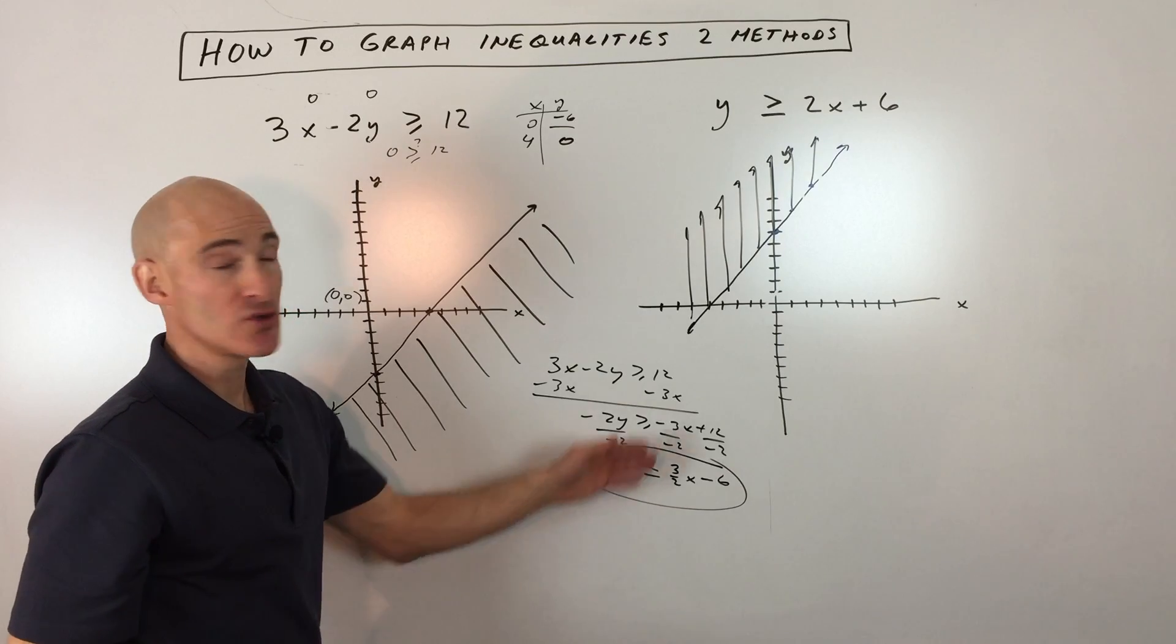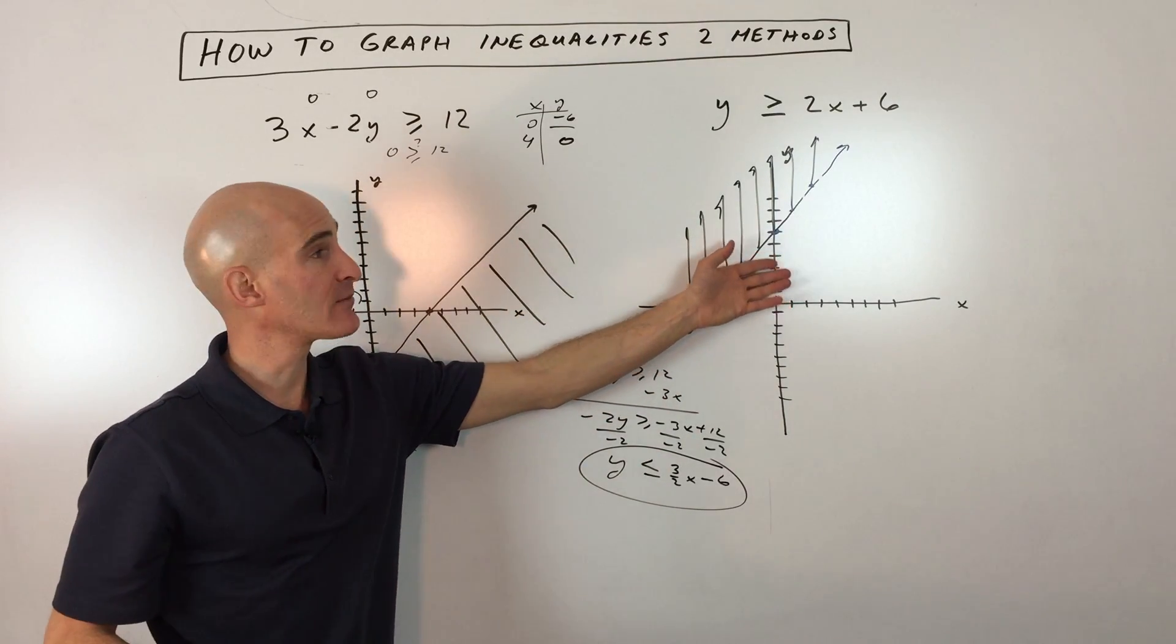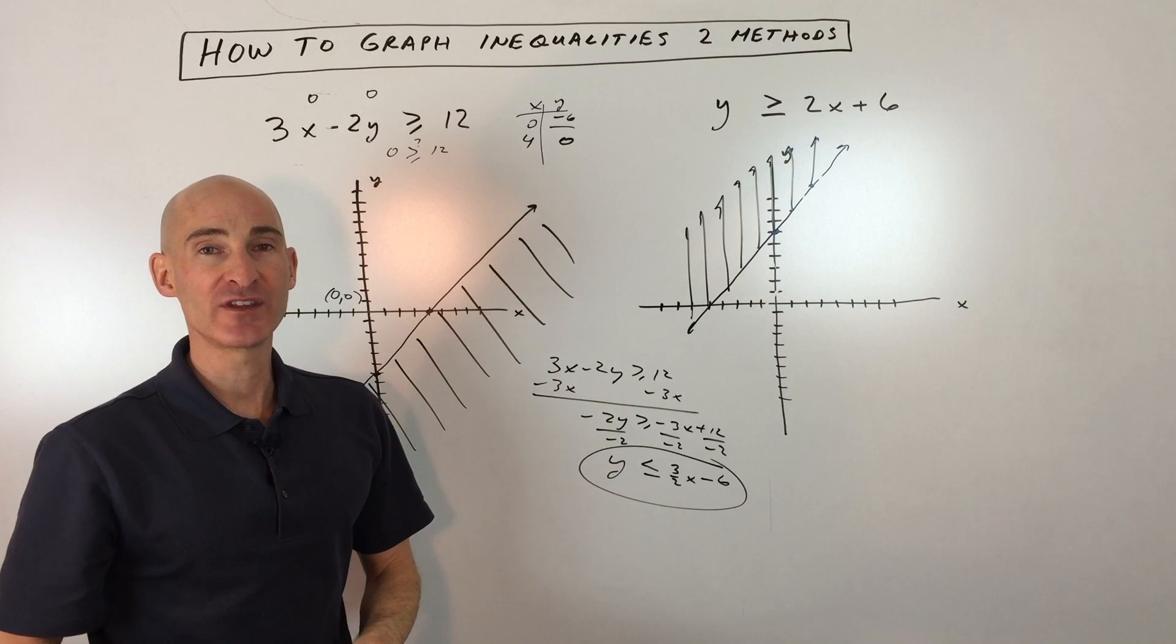So two different methods, the test point method or just using the slope intercept form, you can graph the inequality.